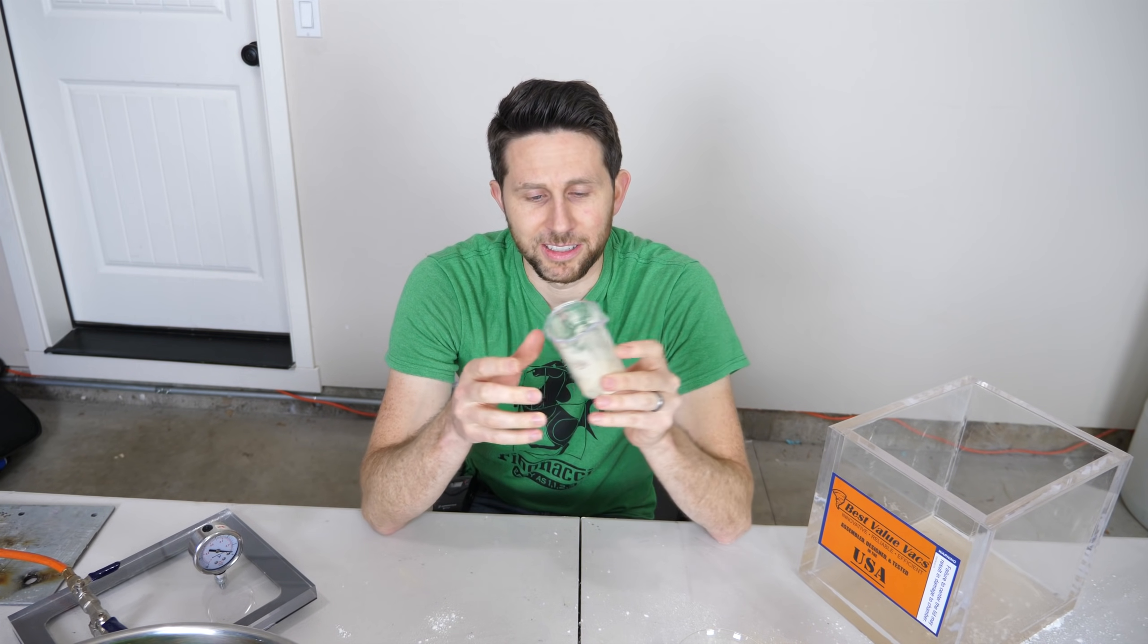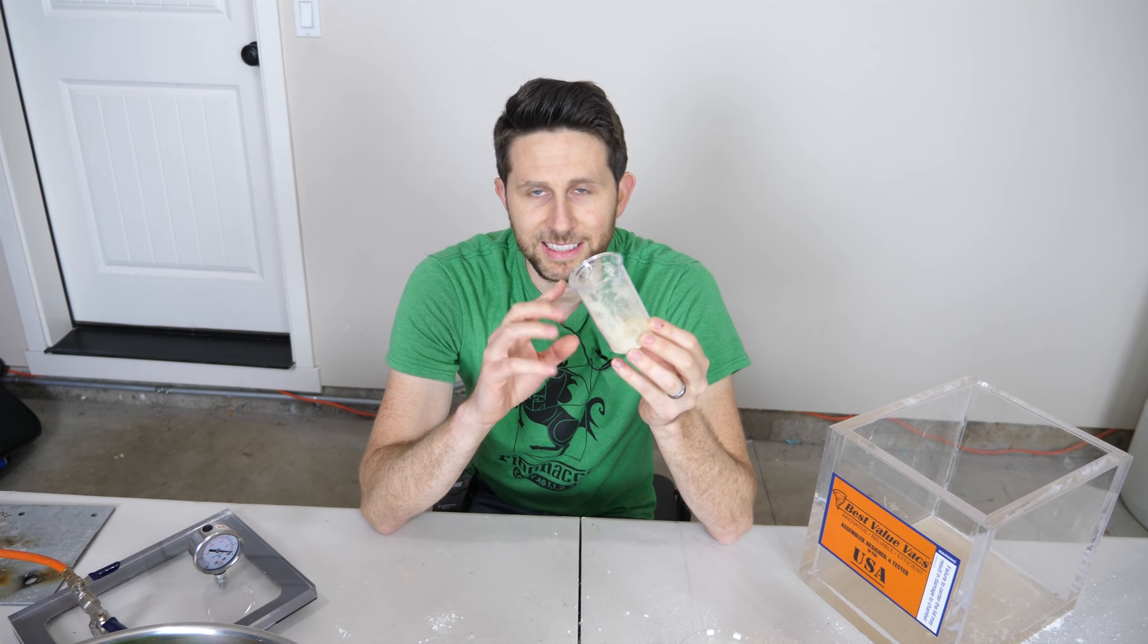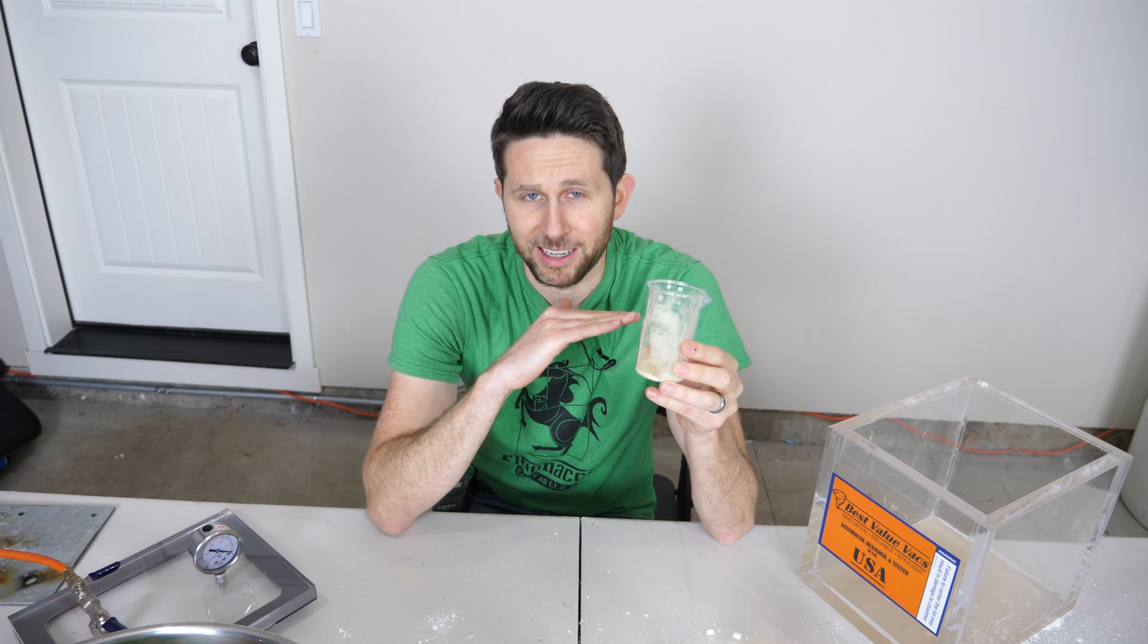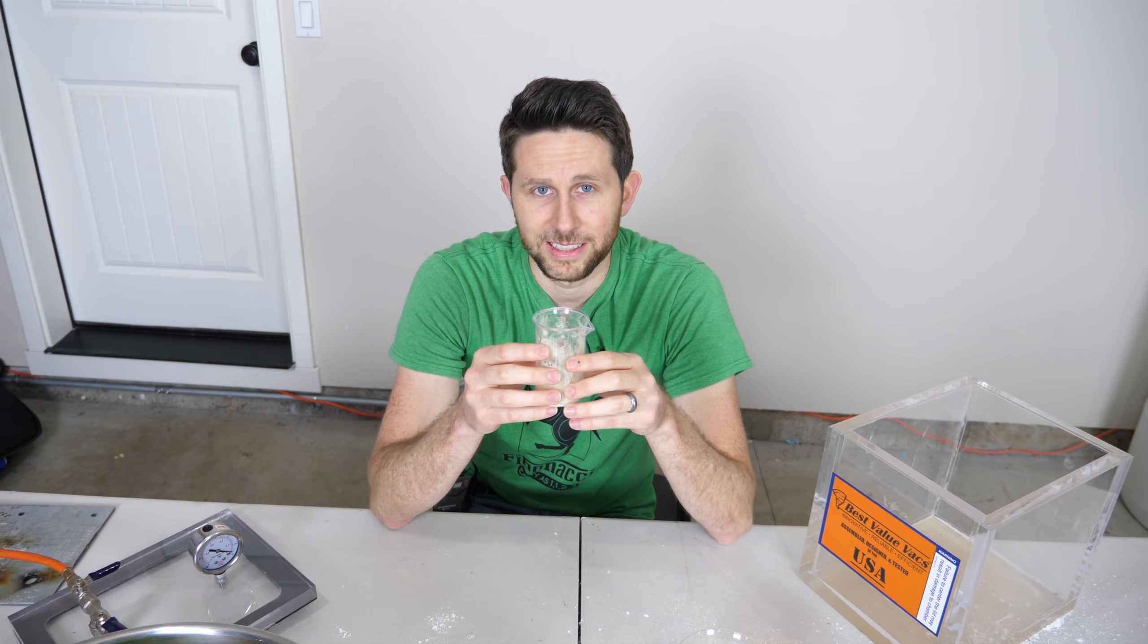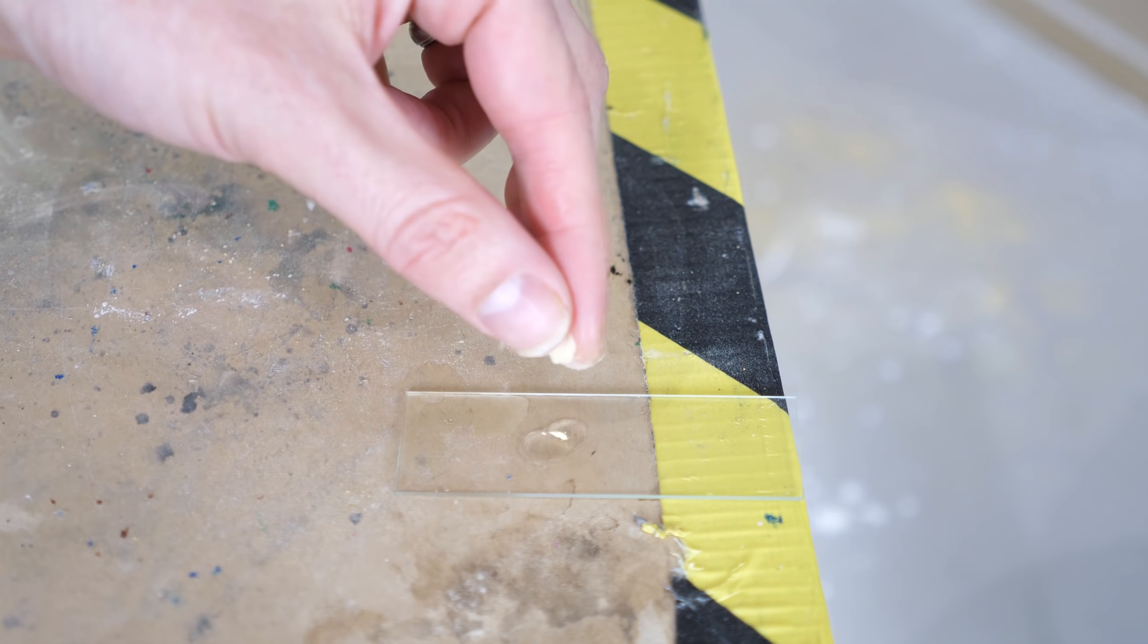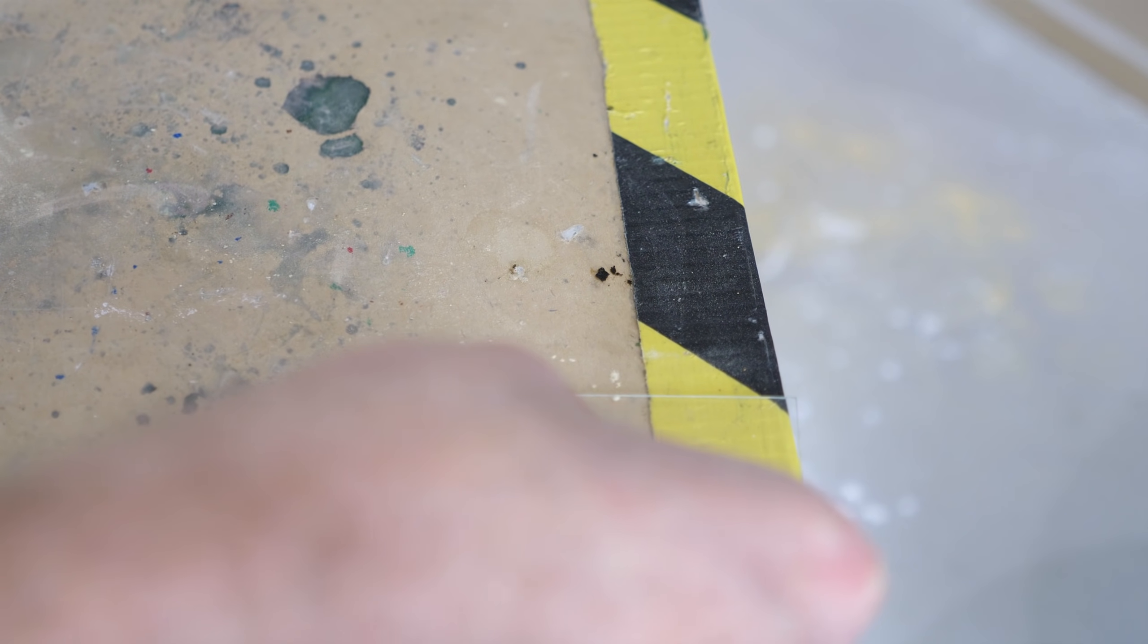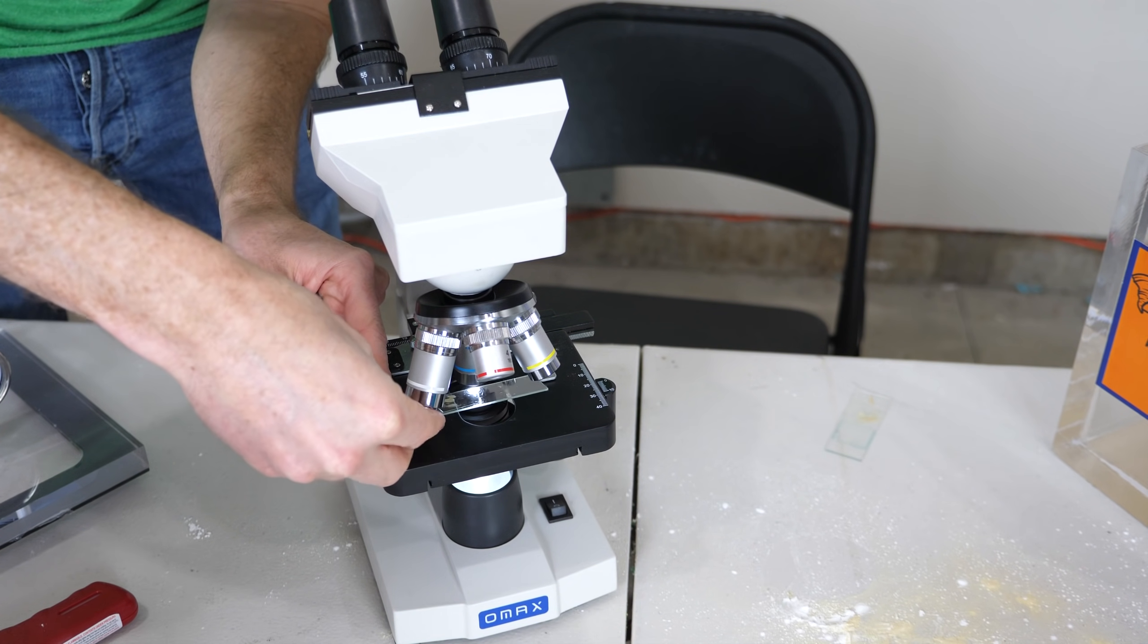So today what I want to do is see if you can actually see Brownian motion by sticking these lycopodium powder granules in water and putting it on a slide under my microscope and seeing if we can actually see them jitter and move around a little bit. So all I do is get a drop of water, put some powder on it, and then put my top slide on. Then all you do is look at it under the microscope.